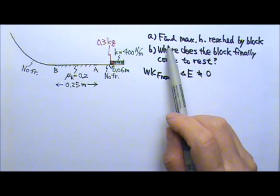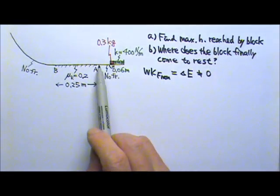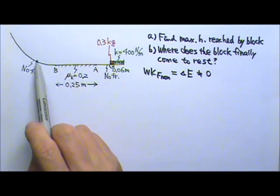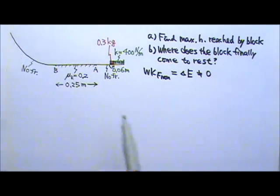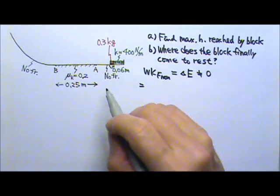In part A, we want to find the maximum height reached by the block. So this block has to go through this region with friction to get to the other side. Let's find the work done by friction in that trip.